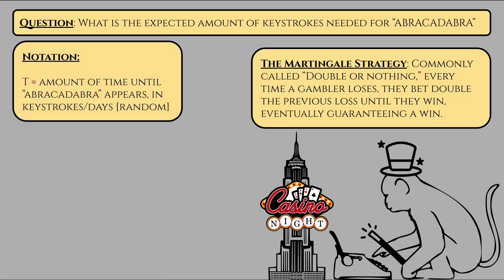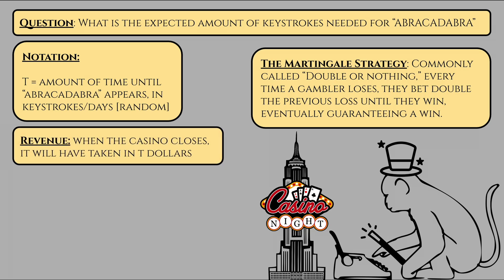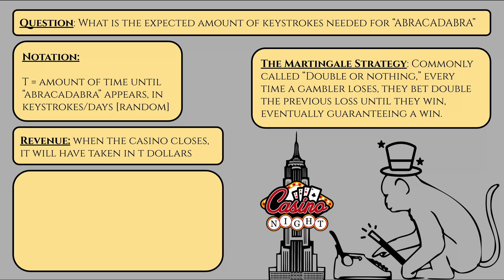Let T denote the amount of time that passes until the full phrase abracadabra appears, in units of keystrokes. When this occurs, the casino closes as the monkey spectacle has completed its objective. The owners would certainly want to know how much gross revenue the casino has made — total amount of money that has entered the casino. Since every keystroke meant one gambler was putting $1 into the casino system, T keystrokes means the casino made T dollars. The casino is also guaranteed to pay out exactly one person who would be making the full 26 to the power of 11 dollars, since that's when the casino's condition to close activates.